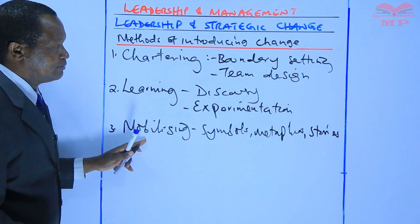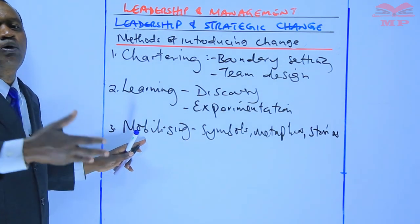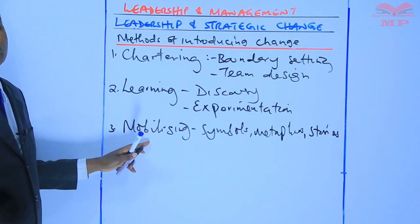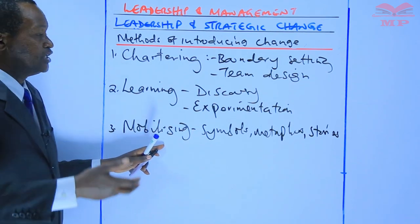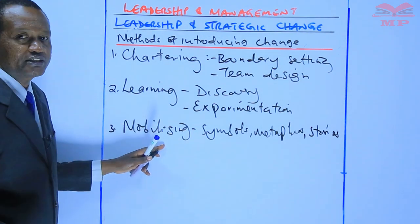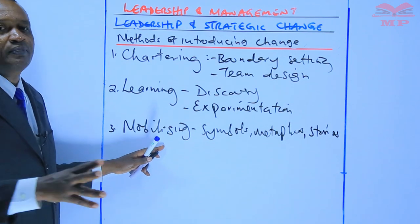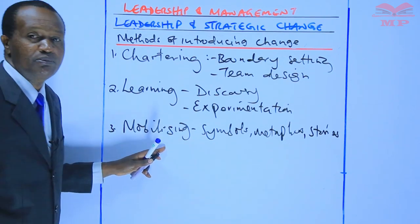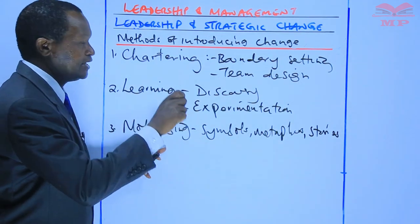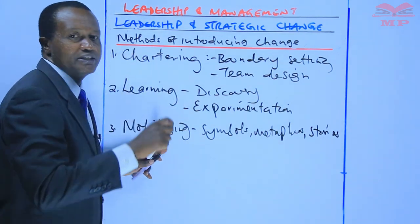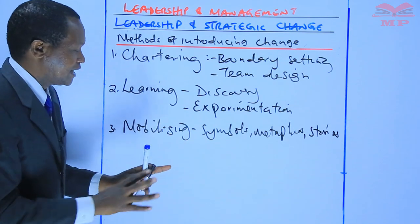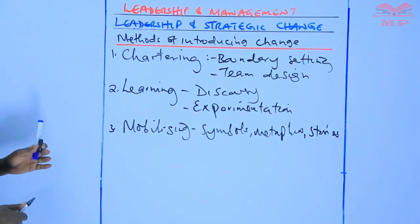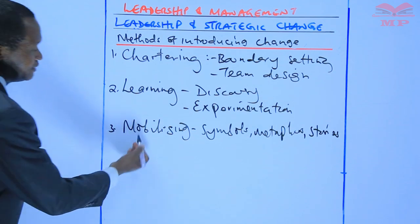There have to be metaphors to create compelling accounts about the need for change, and also to explain specific changes through stories. There also has to be symbolism, or symbolic action, which is the use of symbols to reinforce the credibility as well as the legitimacy of the core team and its message. That is the third method.